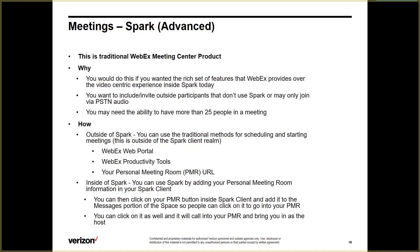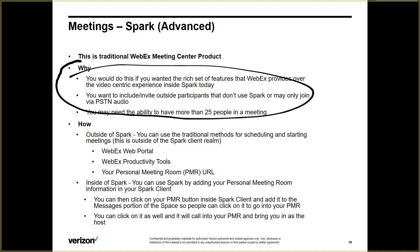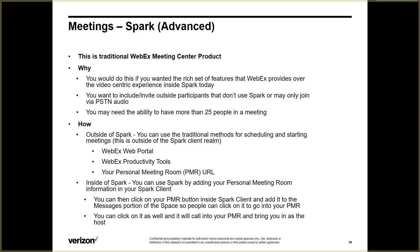So how would you use advanced meetings? Outside of Spark, you'd use the traditional WebEx portal or WebEx productivity tools. Inside Spark, you can use your personal meeting room. They've given you the capability to glue your personal meeting room URL into Spark — you can click your PMR button inside the Spark client, add it to the message portion of the space, and people can click to go into your PMR.